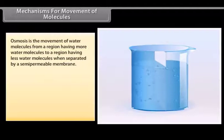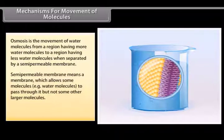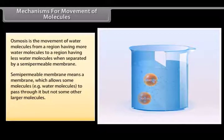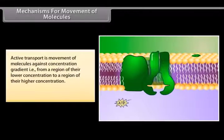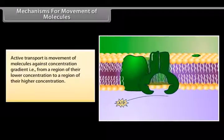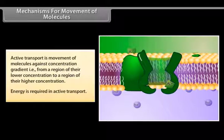Osmosis is the movement of water molecules from a region having more water molecules to a region having fewer water molecules, when separated by a semi-permeable membrane. A semi-permeable membrane allows some molecules, such as water molecules, to pass through but not larger molecules. No energy is spent during diffusion or osmosis. Active transport is the movement of molecules against the concentration gradient, from a region of lower concentration to higher concentration, and requires energy.